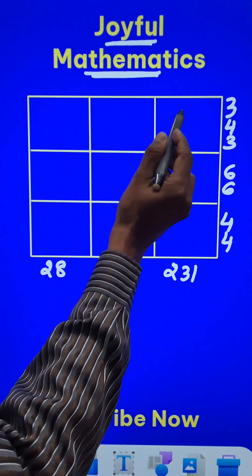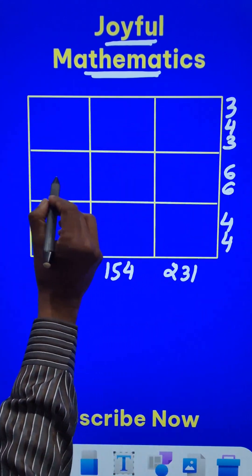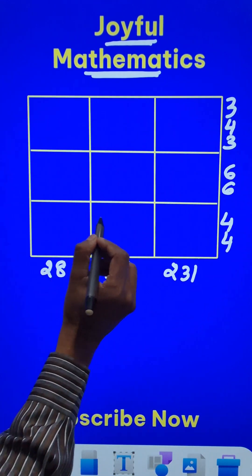Now I have to fill these boxes using some prime numbers, so that when I multiply these three numbers, I should get 343. Multiply these three, you get 66. Multiply these three, you get 44.